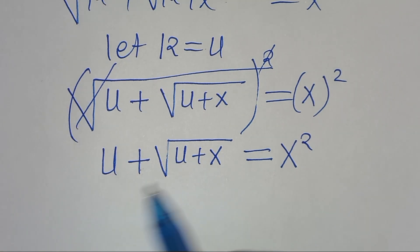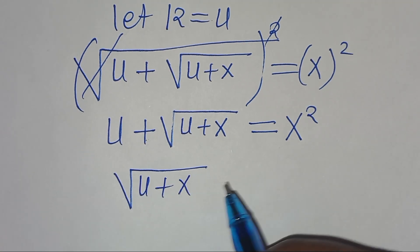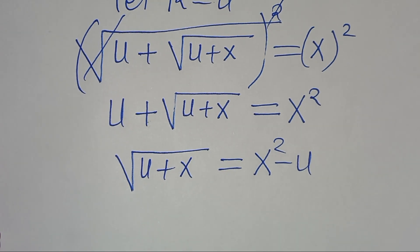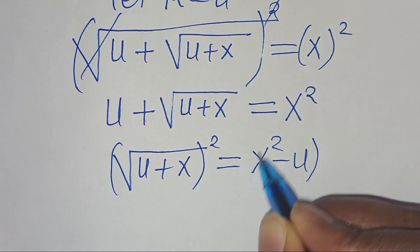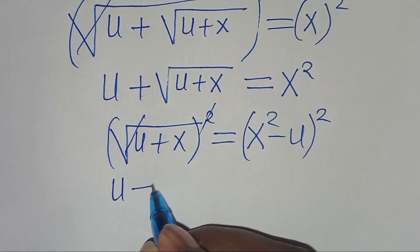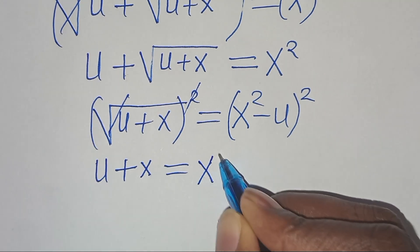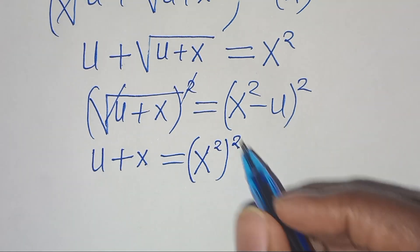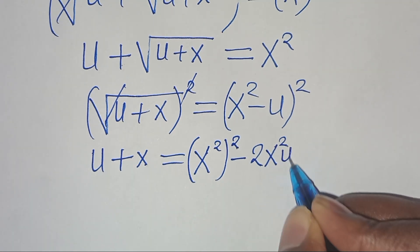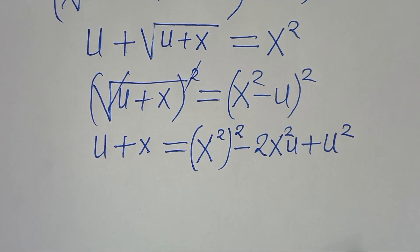The next step is to take u to the right hand side, so that we have the square root of u plus x, equal to x squared minus u. Now let's square both sides again to eliminate the square root sign. We have u plus x equal to x squared raised to the power of 2, minus 2 times x squared times u, plus u squared.